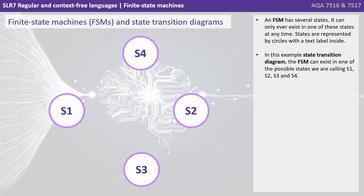A finite state machine has several states and can only ever exist in one of these states at a time. States are represented by circles with a text label inside. In this example state transition diagram, the finite state machine can exist in one of the possible states we're calling S1, S2, S3 and S4.